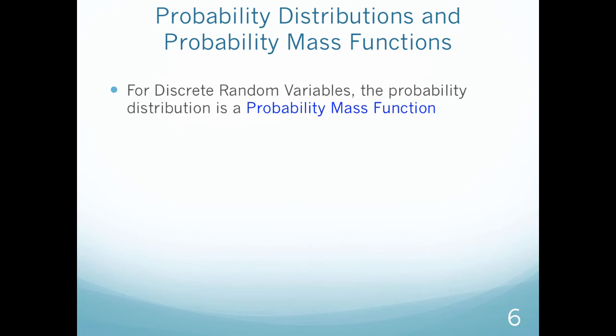For discrete random variables, the probability distribution is called a probability mass function. So keep that in mind. A probability distribution is a probability mass function.